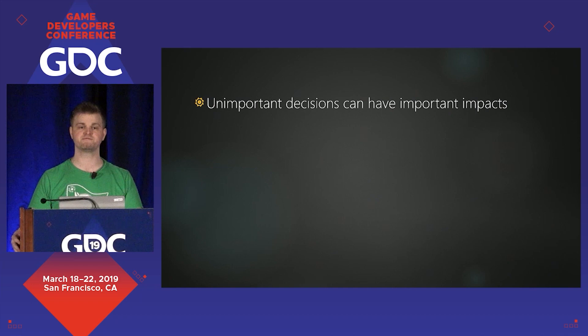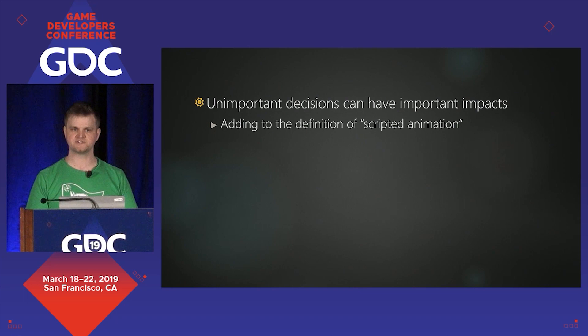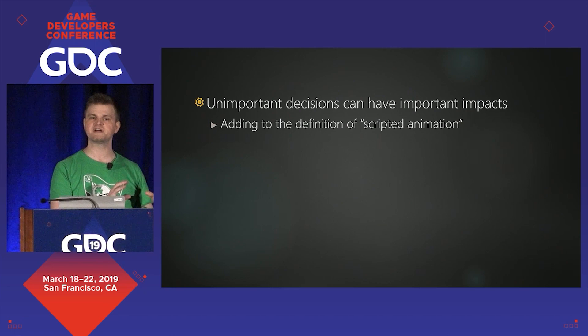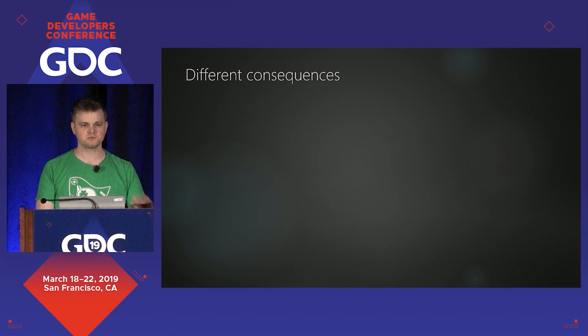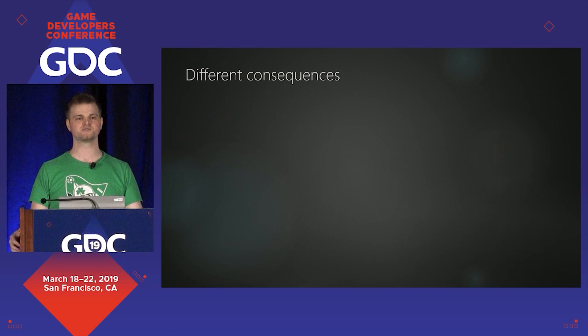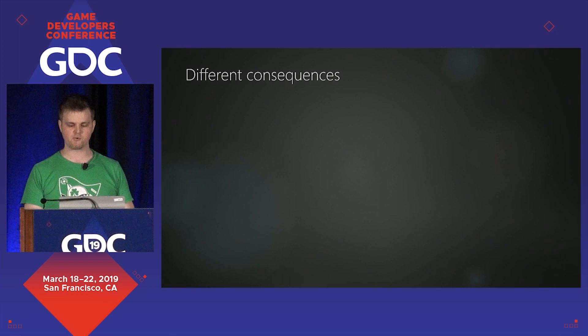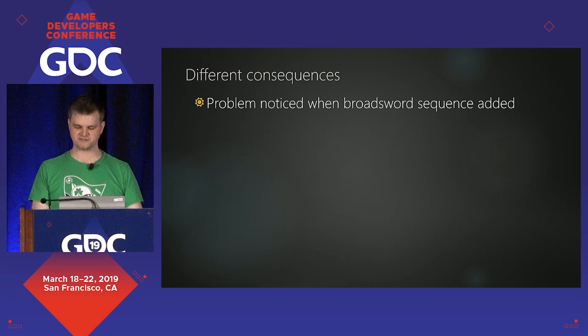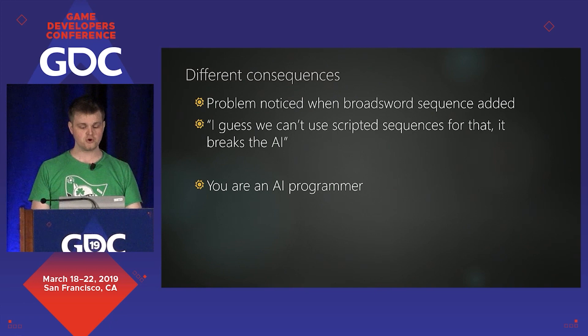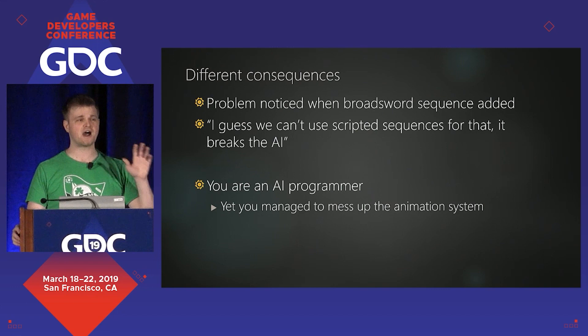You took the concept of scripted animation and added to its definition. Before, it was a detail of the animation system. Now it's a rule of gameplay, but it still has to be a detail of the animation system. Imagine a good QA tester found this a day after the broadsword became a scripted sequence. The combat programmer says, 'I guess we can't use scripted sequences for that because it breaks the AI.' You, the AI programmer, just made the animation system worse, because you got there first and imposed a definition on something without doing a good job of it.